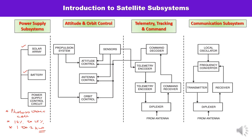The second component of the power supply subsystem is the battery. When there is no availability of sun during unfavorable weather conditions — during snowfall or at night — there is a requirement for battery backup when solar power is not available. The third component, power supply control circuitry, is used to control and monitor the various units. This completes the power supply subsystem.